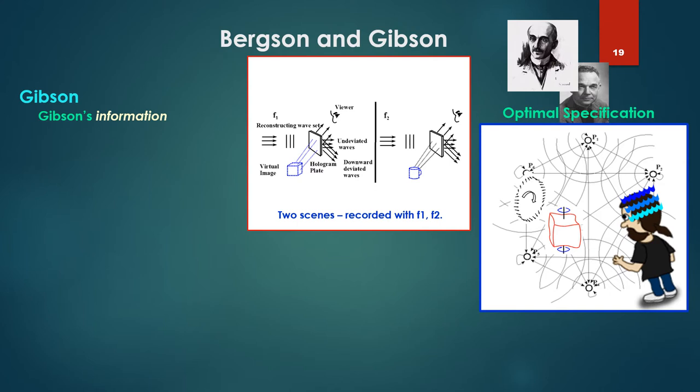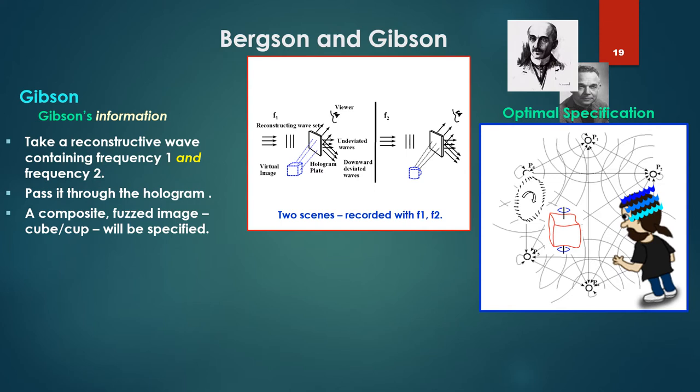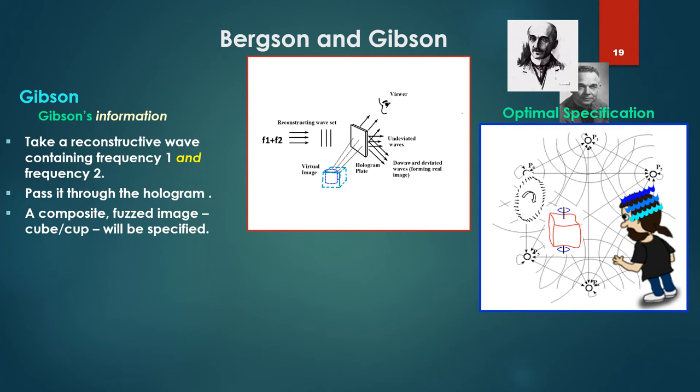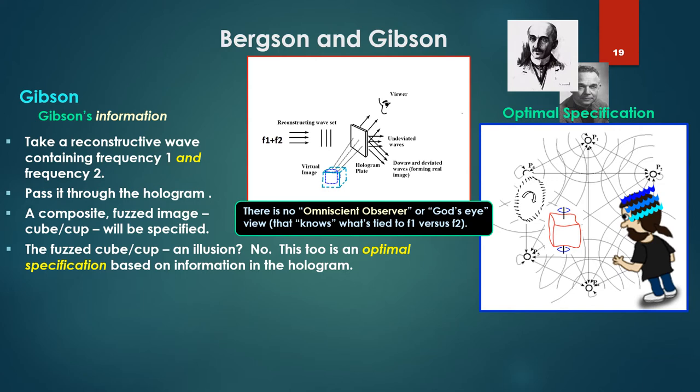So consider there our central picture. We have two scenes that we've recorded. The cube with frequency one, the cup with frequency two. There's two different interference patterns on that holographic plate. Now suppose we take a reconstructive wave containing frequency one and frequency two and pass it through the hologram. What you're going to get is a composite fuzzed image, cube slash cup. This will be specified. So the fuzzed cube slash cup is an illusion. Well, not actually. This too is an optimal specification based on information in the hologram based on that reconstructive wave. Given the reconstructive wave, we're specifying what can be specified. Again, assuming there is no omniscient observer.